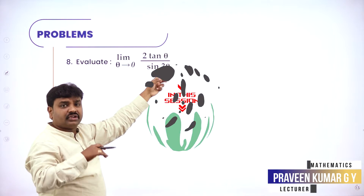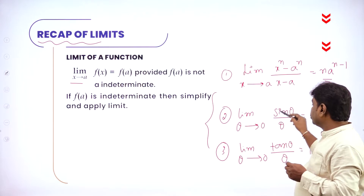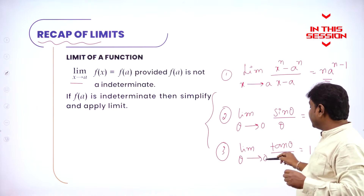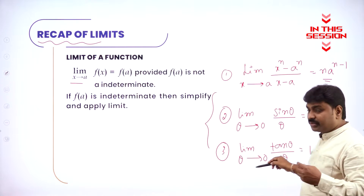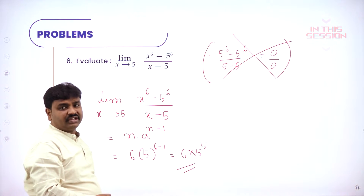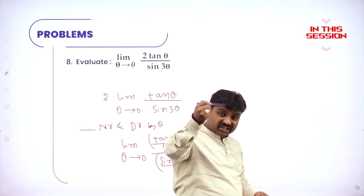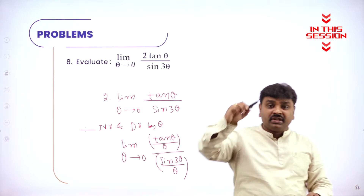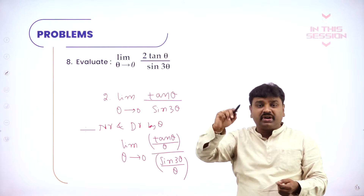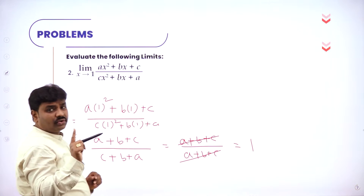Here denominator three zeros are zero, sine zero is zero, you'll get zero by zero. What is limit theta tends to zero sine theta by theta? One. Limit theta tends to zero tan theta by theta? One. Five multiply five times, and then you multiply with six, you'll get the answer. If you have limit of f of x by g of x, then you can apply limit separately for numerator. You should not get zero by zero, you should not get infinity by infinity, you should not get zero power zero.